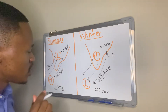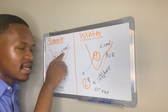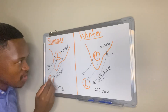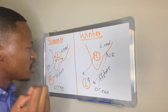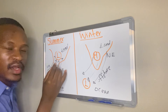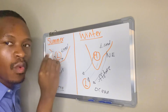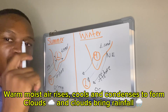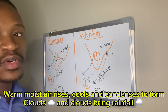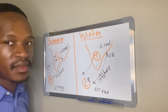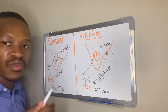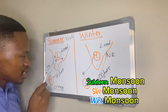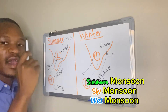We know that our ocean has more moisture compared to land. So our onshore winds, which come from the ocean towards the land, will carry more moisture. When they get to the interior, they will arrive as warm moist air — and warm moist air rises. As it rises, it cools and condenses to form clouds, and clouds bring about rainfall. So our summer monsoon is associated with more rainfall, hence it is also known as a wet monsoon. It is known as a southwest monsoon, a summer monsoon, or a wet monsoon.